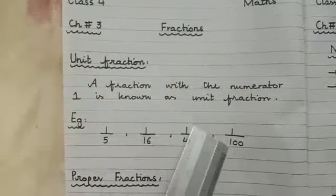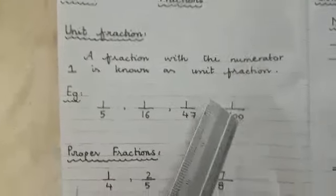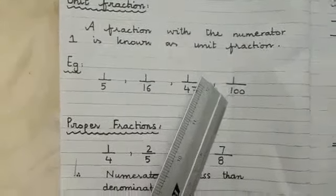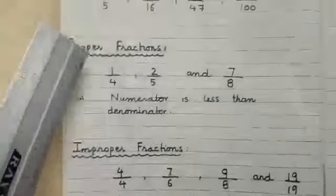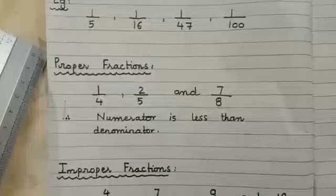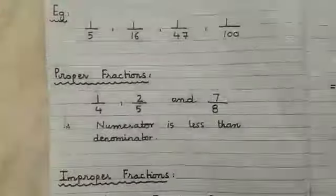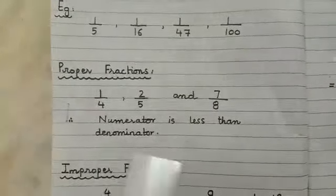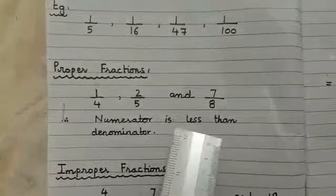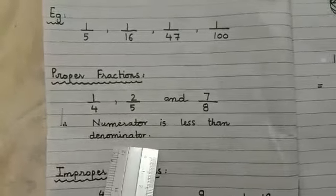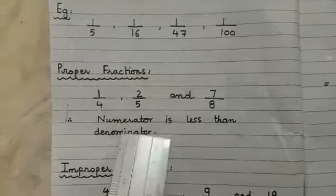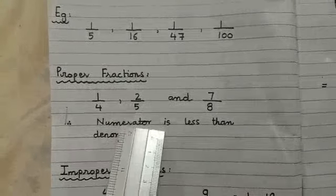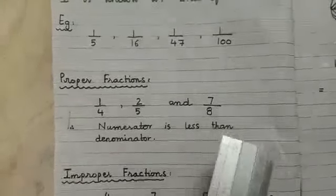1 by 100. What is the numerator? 1. This is also a unit fraction. Next, the definition of proper fractions. Proper fractions are those fractions in which the numerator is less than the denominator — that means the numerator must be smaller than the denominator.